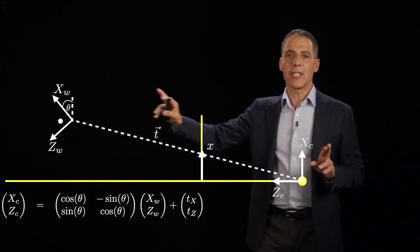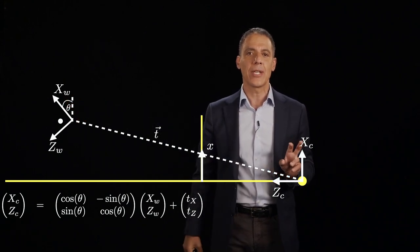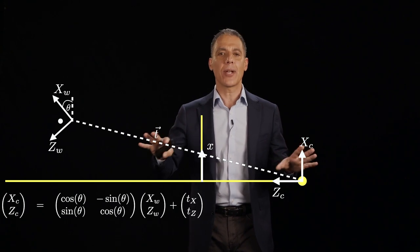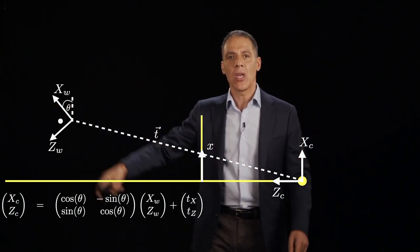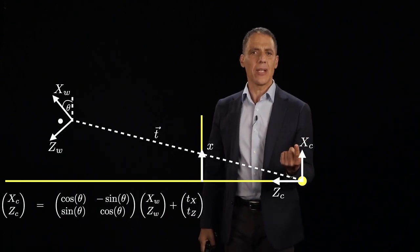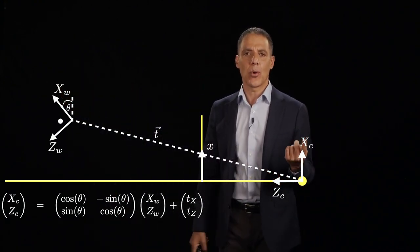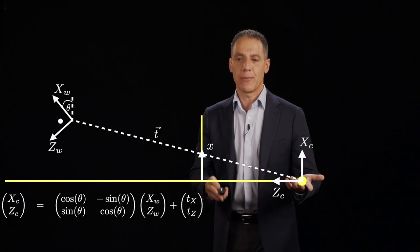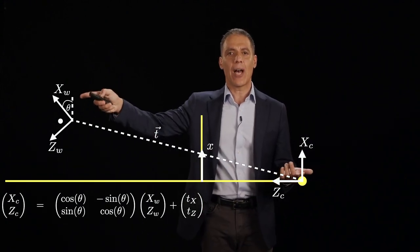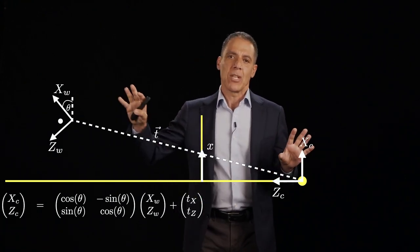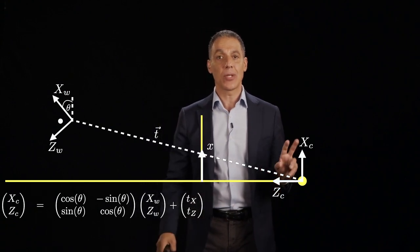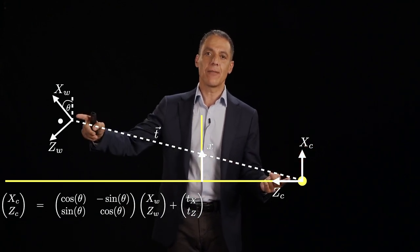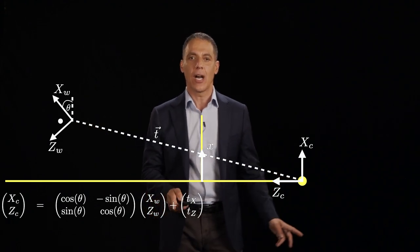The first thing we have to do is relate these two coordinate systems — XW, ZW in the world and XC, ZC in the camera. Both are two-dimensional. I want to know: if I specify a point in one coordinate system, what is its coordinate in the other? The reason is that once I know it in the camera coordinate system, perspective projection takes over. These two systems are related by an in-plane rotation and a translation of their origins.